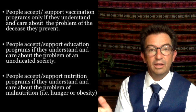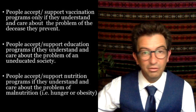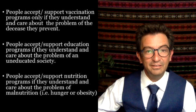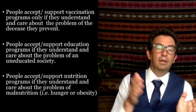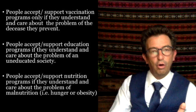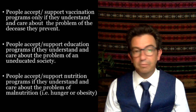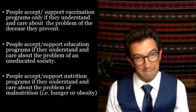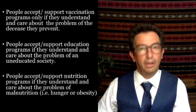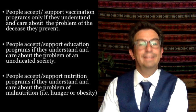For example, people will only accept and support vaccination programs if they understand and care about the problem of the disease those vaccines prevent. If they don't care about or understand that problem, they will not accept or support the vaccination program. People will accept or support education programs only if they understand and care about the problem of an uneducated society. And people will only accept and support nutrition programs if they understand and care about the problem of malnutrition — hunger, obesity, etc. If people are to support a solution, they need to understand the problem.